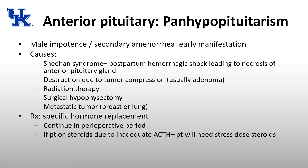The anterior pituitary is responsible for the secretion of six hormones: prolactin, growth hormone, ACTH, gonadotropins — luteinizing hormone and follicle-stimulating hormone — as well as TSH. Usually, you don't see an isolated deficiency of an anterior pituitary hormone, because something that is going to affect one part of the anterior pituitary usually affects the entire anterior pituitary.